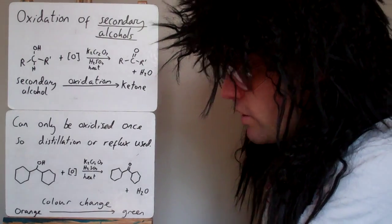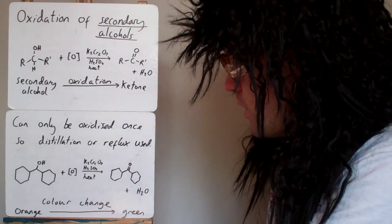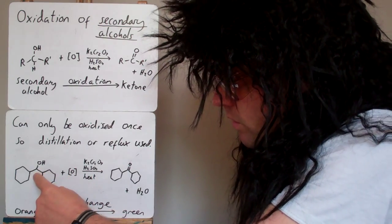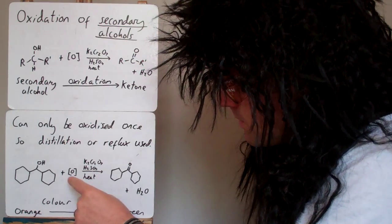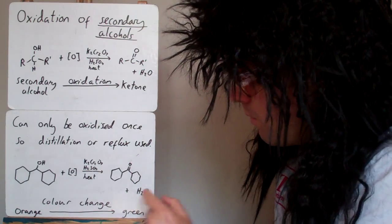Let's look at this example here. Here we've got a secondary alcohol where this carbon is bonded to that carbon and that carbon. When oxidized, we make a ketone and a molecule of water.